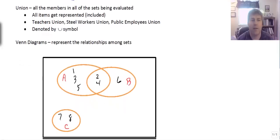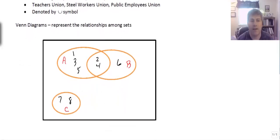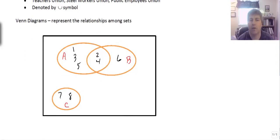So here's an example of some Venn diagrams. Venn diagrams represent the relationships among sets. So we have here three different sets: set A, set B, and set C. And there are items within each set.